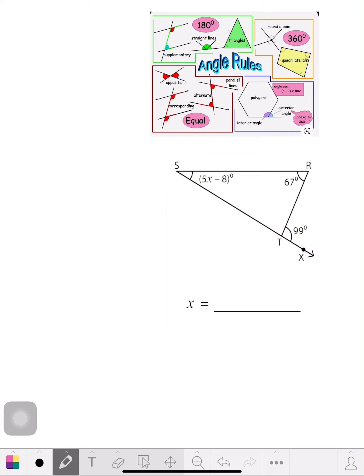We know from the angle rules that a straight line is 180. So that means that this angle here is 180 minus 99. That means it's 81 degrees.